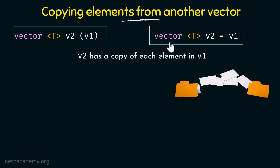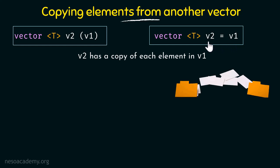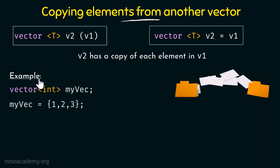Similarly we have another syntax with the same meaning. Here we have vector and then the type specified within angle brackets and the name of the vector, and we say equal to v1. This also means the same thing — whatever elements are there in v1 are copied to v2.